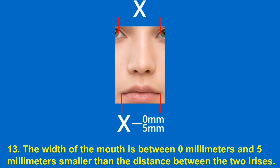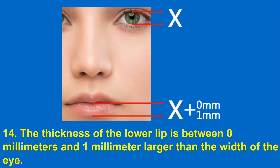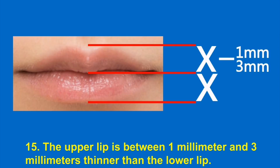13. The width of the mouth is between 0 millimeters and 5 millimeters smaller than the distance between the two irises. 14. The thickness of the lower lip is between 0 millimeters and 1 millimeter larger than the width of the eye. 15. The upper lip is between 1 millimeter and 3 millimeters thinner than the lower lip.